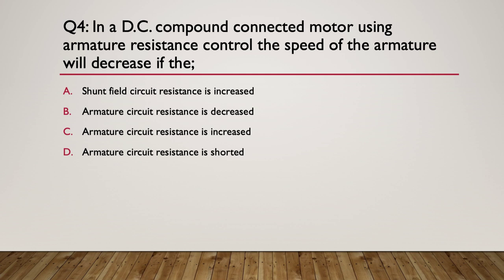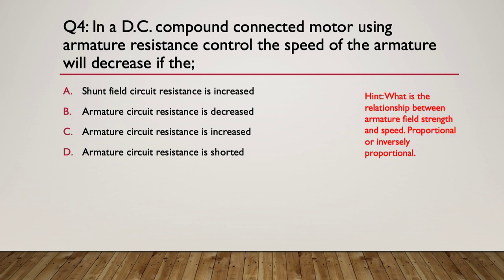Question four: in a DC compound connected motor using armature resistance control, the speed of the armature will decrease if: A — the shunt field circuit resistance is increased; B — the armature circuit resistance is decreased; C — the armature circuit resistance is increased; or D — the armature circuit resistance is shorted. Think about the relationship between armature resistance and speed — proportional or inversely proportional? The answer is C: the armature circuit resistance is increased. If you increase the armature resistance, you decrease the current through it, and the motor speed will decrease.